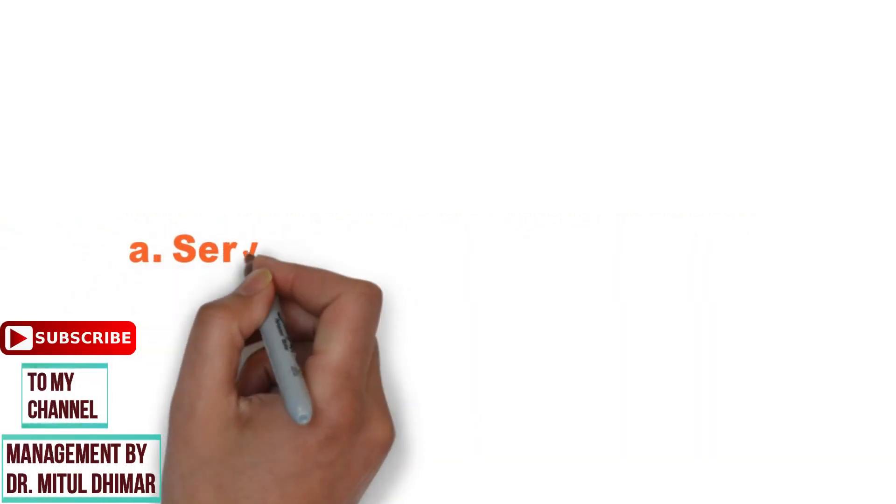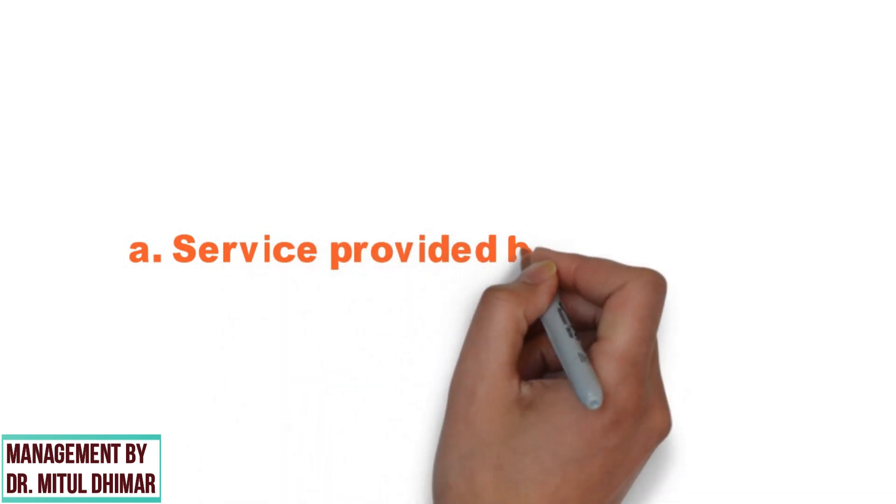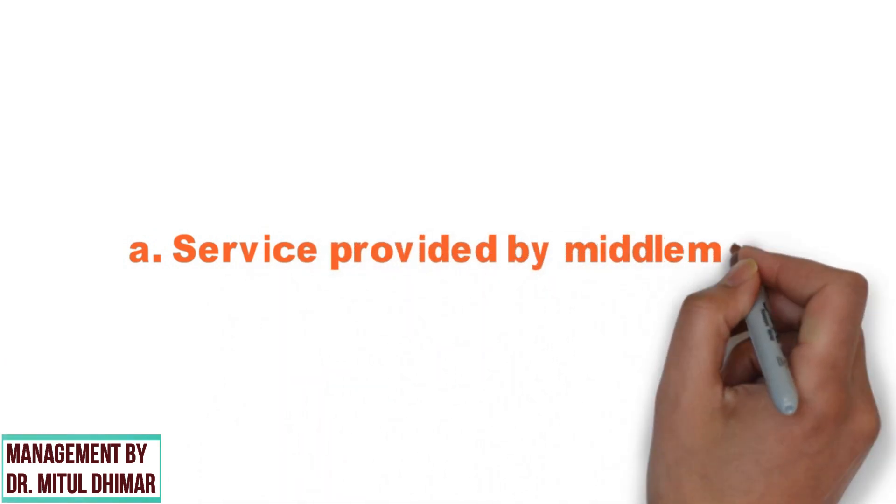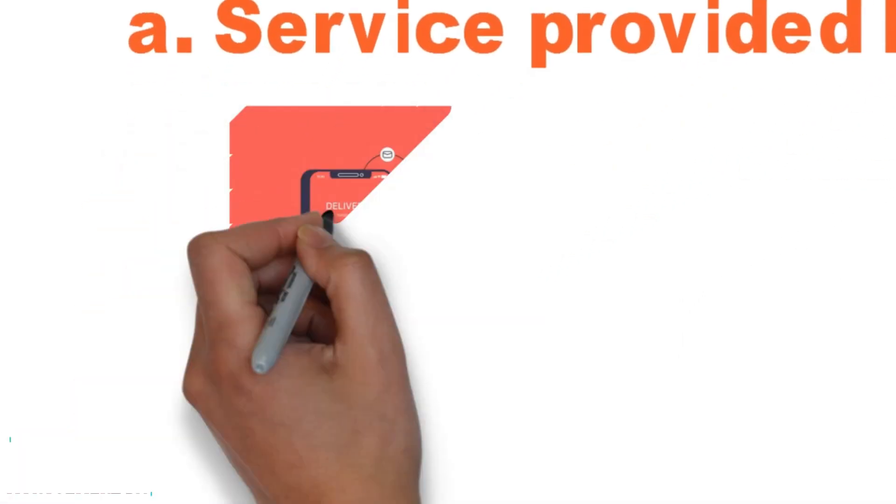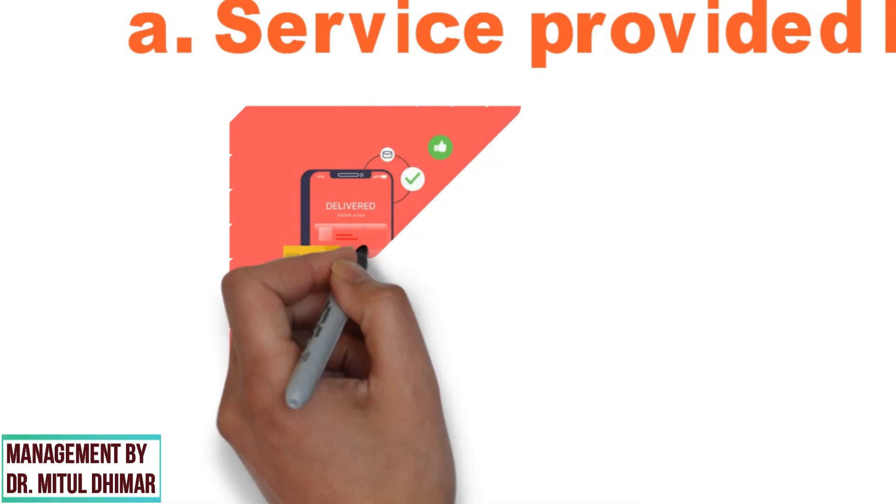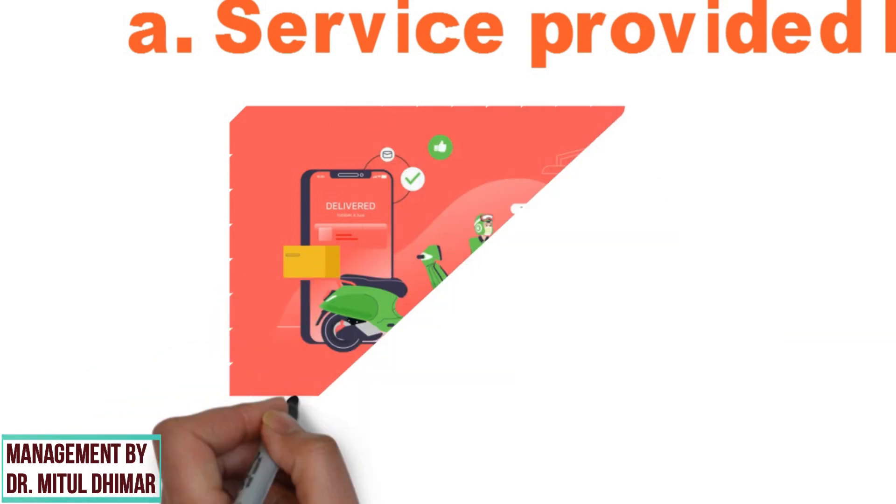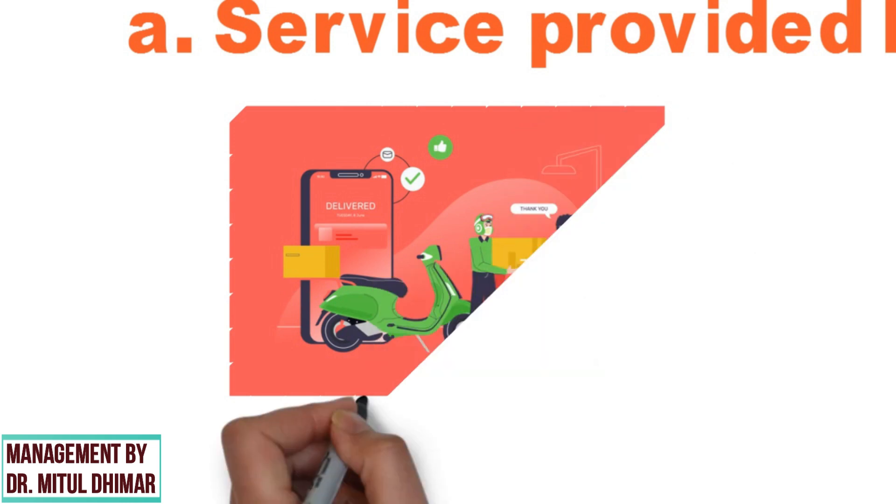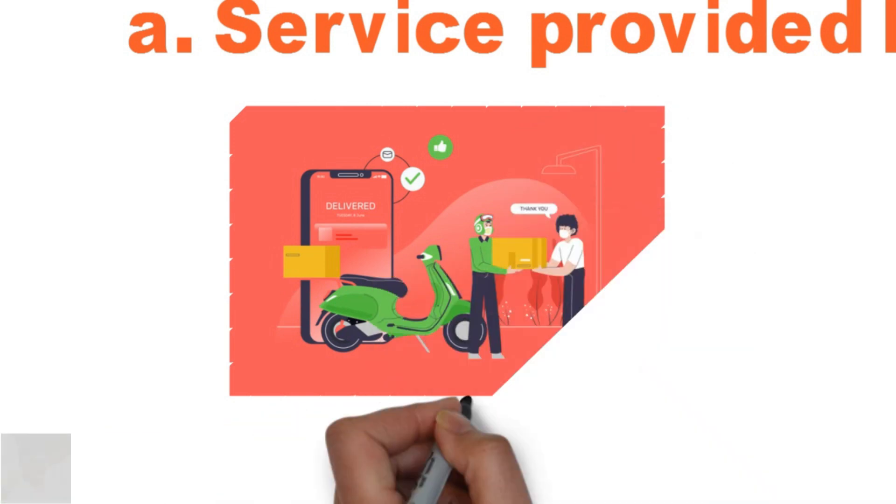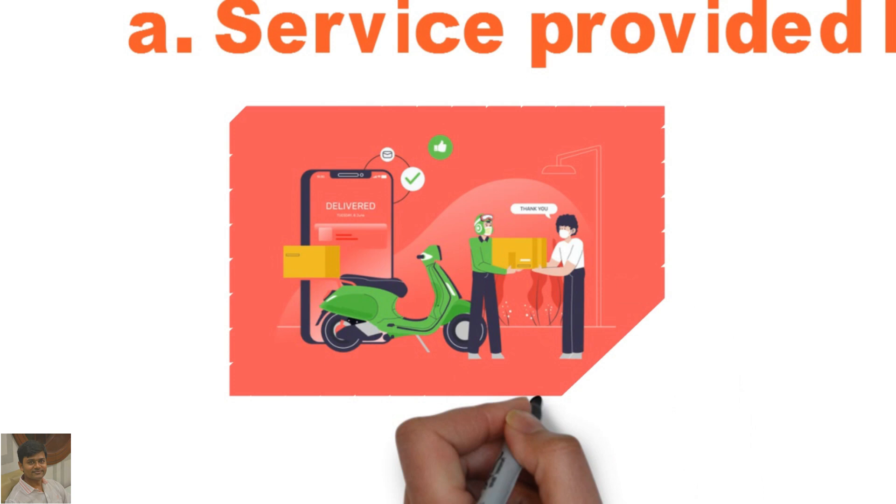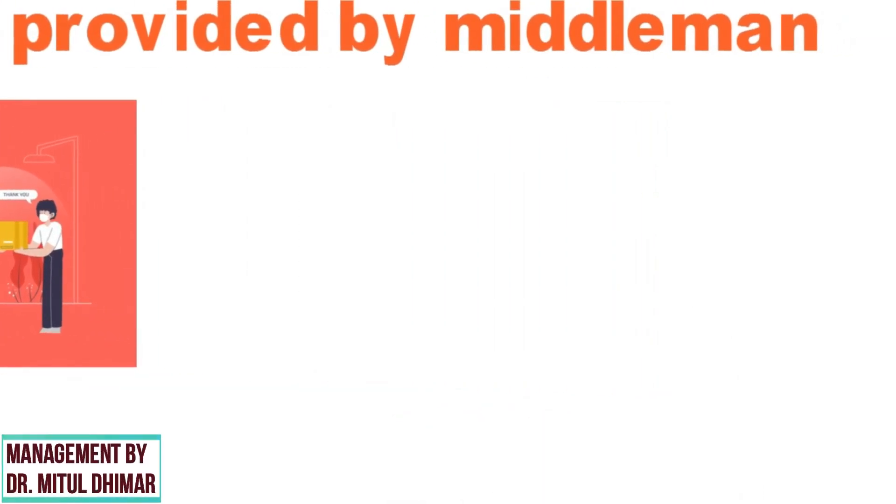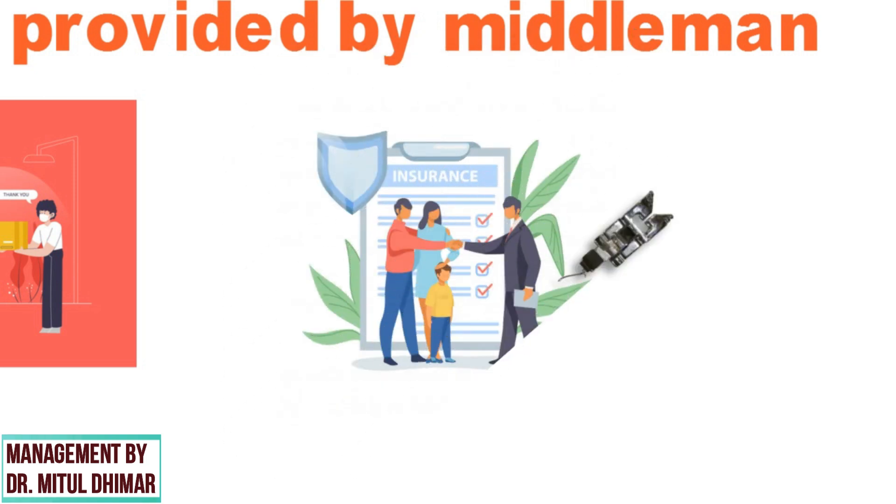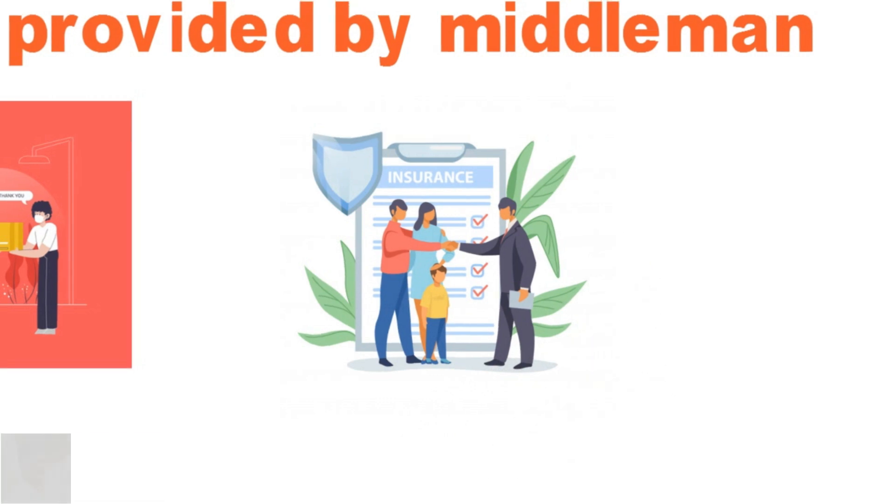Number one is service provided by middleman. When channel members are ready to provide various services to customers such as home delivery, free repair, credit line, installation payment schemes, and other after sales services, manufacturers like to involve them in distribution to make the advantage of these services to customers. For example, insurance agents. They provide many after sales services to clients.